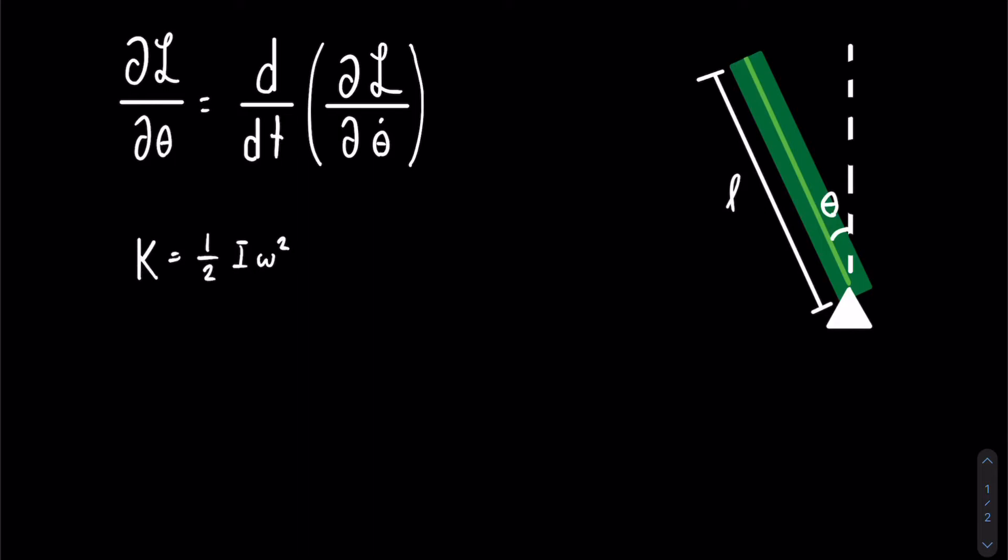The equation for moment of inertia is I equals the integral of r squared dm. r represents a vector showing the distance away from the axis of rotation where the mass is. In order to do this integral, we need the linear mass density, denoted by lambda.